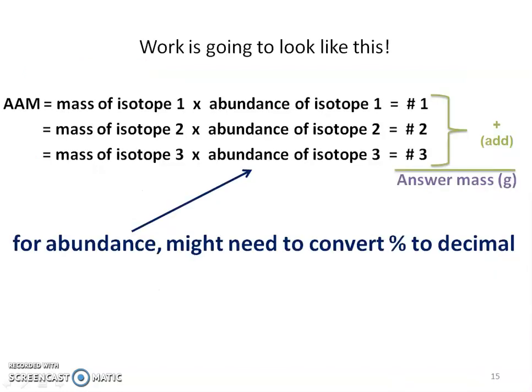So this is what it's going to look like. And again, we'll do an example or two. But what's going to happen is however many isotopes there are, we're going to take its mass, we're going to multiply it by its abundance, and we're going to get a value. So after we get a number for each of those isotopes, we're going to add them up, and that's it. That's going to be our answer of that average atomic mass in grams or AMU.